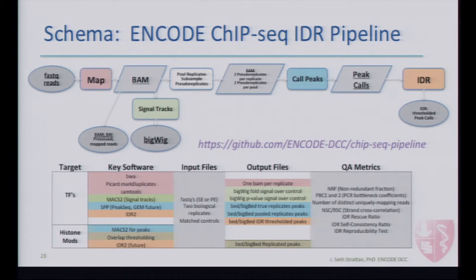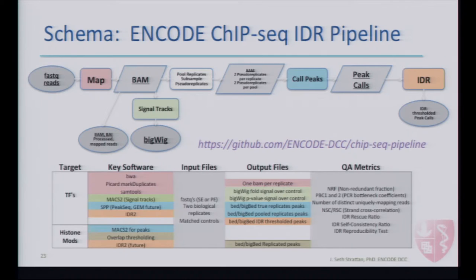The pipeline, like many of the pipelines we deploy, has a mapping step, then a peak calling step, and then a statistical framework applied to the replicated peaks at the end to assess concordance of biological replicates. All ENCODE experiments are replicated, so this last piece called IDR is something we run on all ENCODE experiments. If your experiments are not replicated, you can't run this, but you can still call peaks.